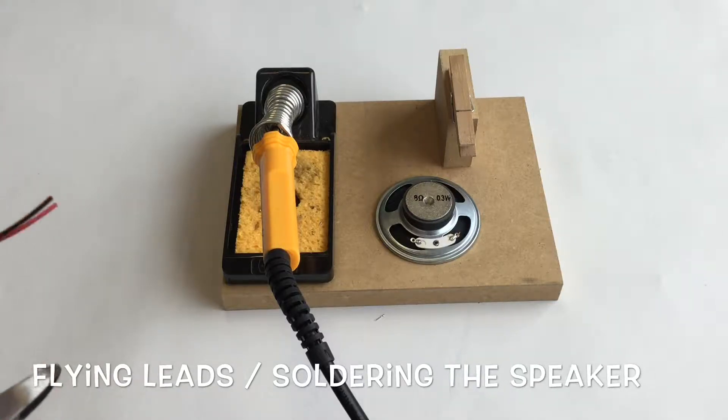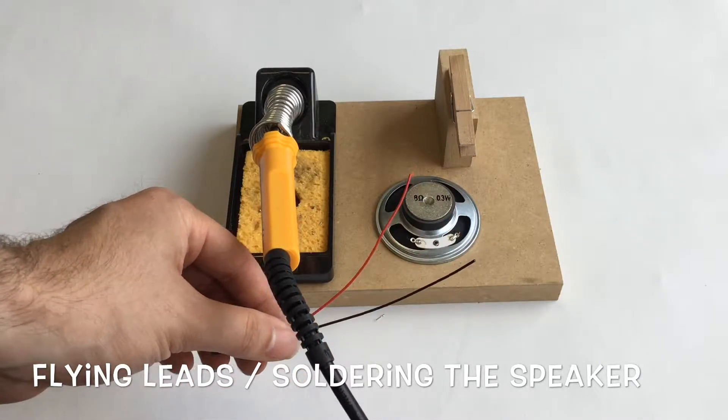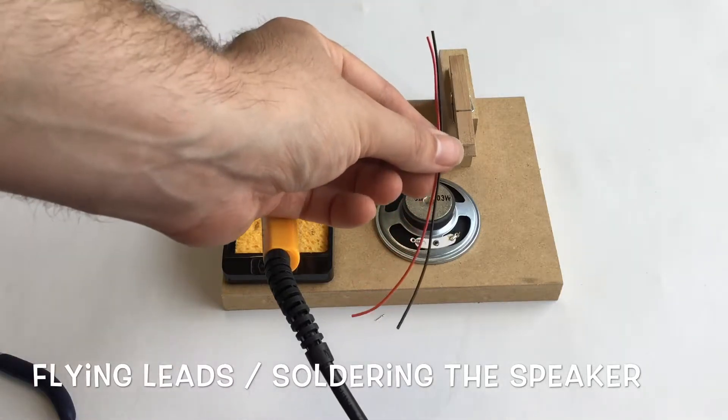The next task is to create flying leads for the speaker. You'll need two pieces of wire, I've used red and black, and you'll need to cut them to about 10-12 centimeters long.